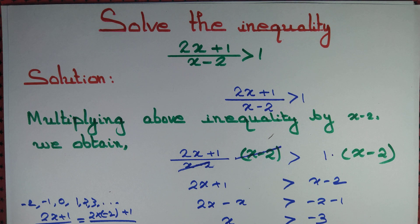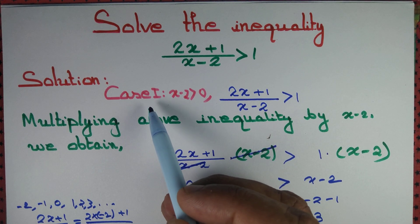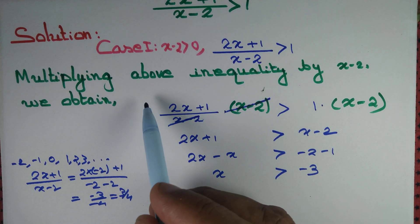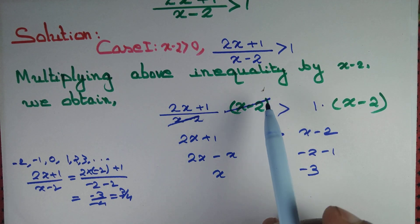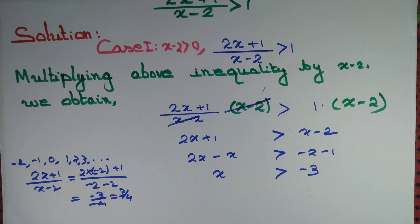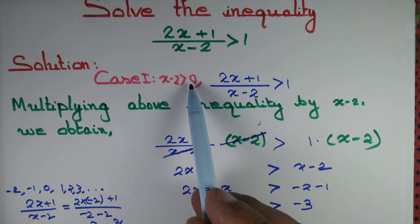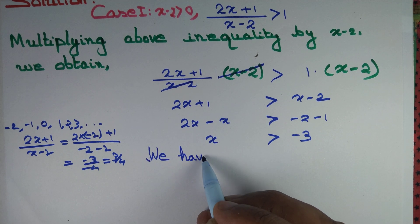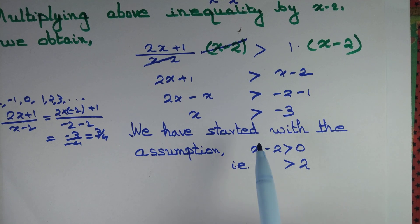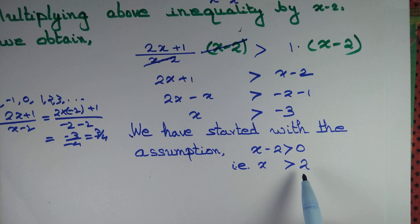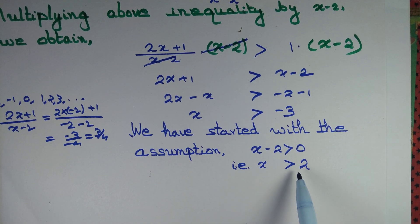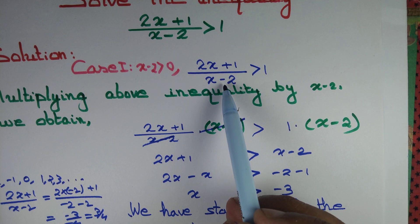This multiplication is valid only when x minus 2 is greater than 0. So we start with the assumption x minus 2 is greater than 0, that is x greater than 2. We multiply by a positive quantity so the inequality remains valid and we cancel x minus 2, giving 2x plus 1 is greater than x minus 2. We also need x greater than minus 3. Since x greater than 2 satisfies both, we conclude that 2x plus 1 by x minus 2 is greater than 1.